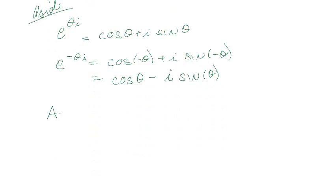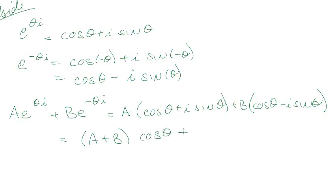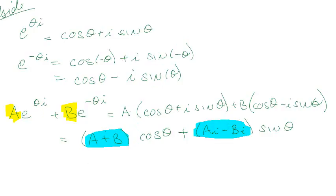For absolutely no reason at all, let's make a linear combination of the two. So we have a times (cosine θ + i sine θ) and b times (cosine θ − i sine θ). Putting the cosines together, I get (a + b) cosine θ, and putting the sine terms together I get (ai − bi) sine θ. Instead of keeping arbitrary constants a and b, I can just relabel them as c1 cosine θ and c2 sine θ.